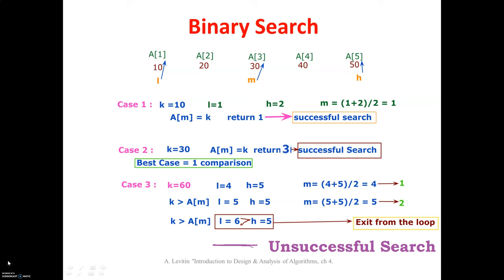Binary search is an example of divide and conquer. To apply binary search, the elements of the array must be sorted. Here n equals 5; set l to the lower index equal to 1, and h to the upper index equal to 5.